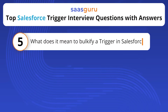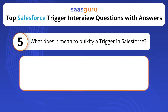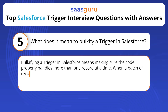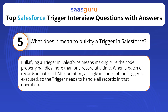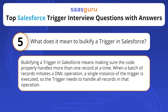What does it mean to bulkify a trigger in Salesforce? Bulkifying a trigger in Salesforce means making sure the code properly handles more than one record at a time. When a batch of records initiates a DML operation, a single instance of the trigger is executed, so the trigger needs to handle all records in that operation.